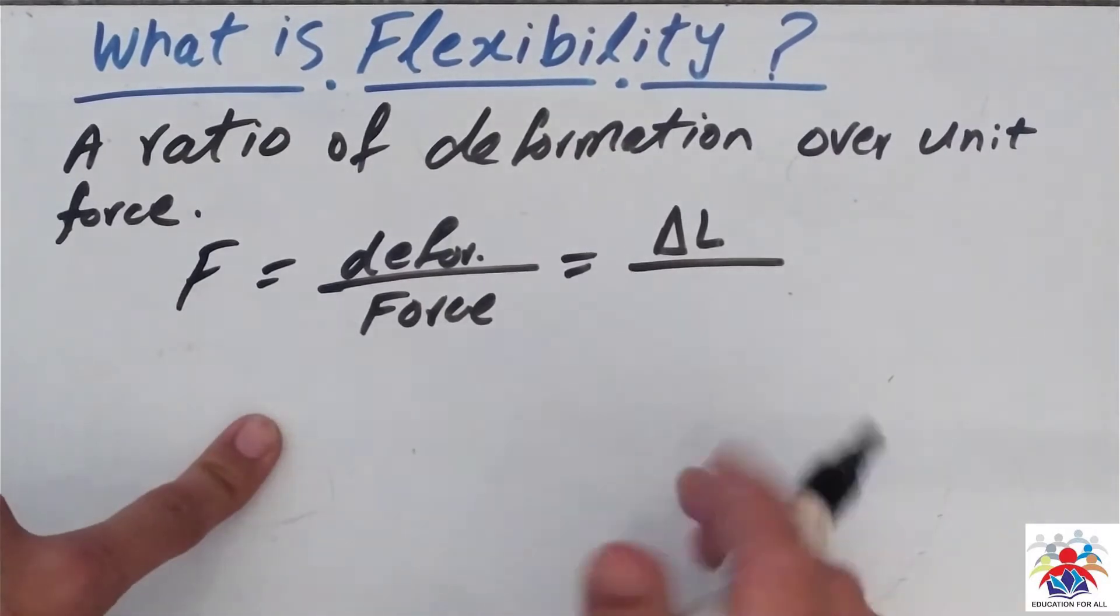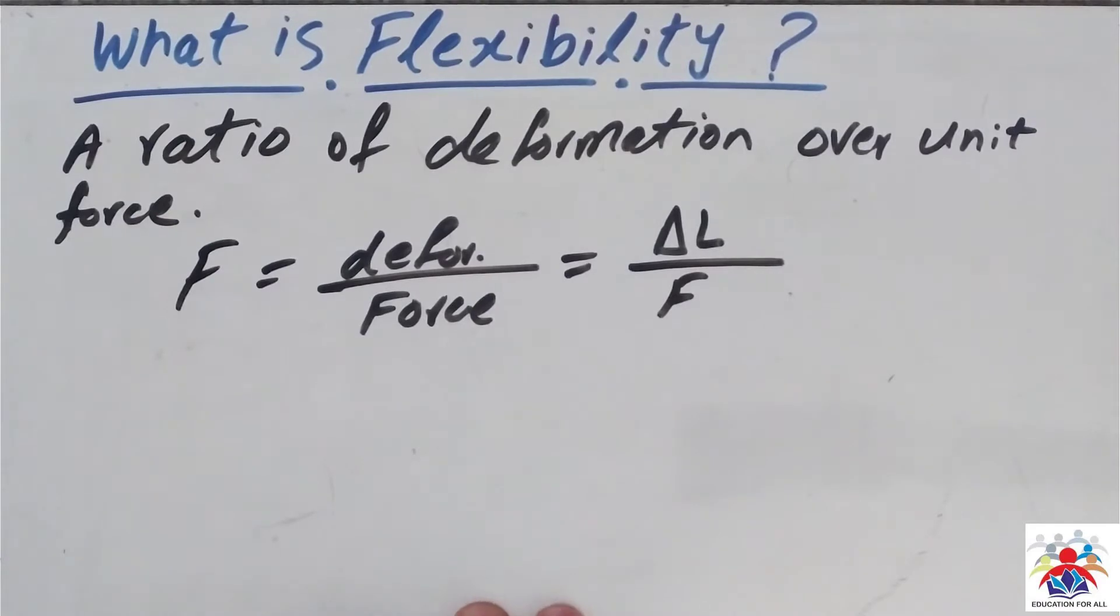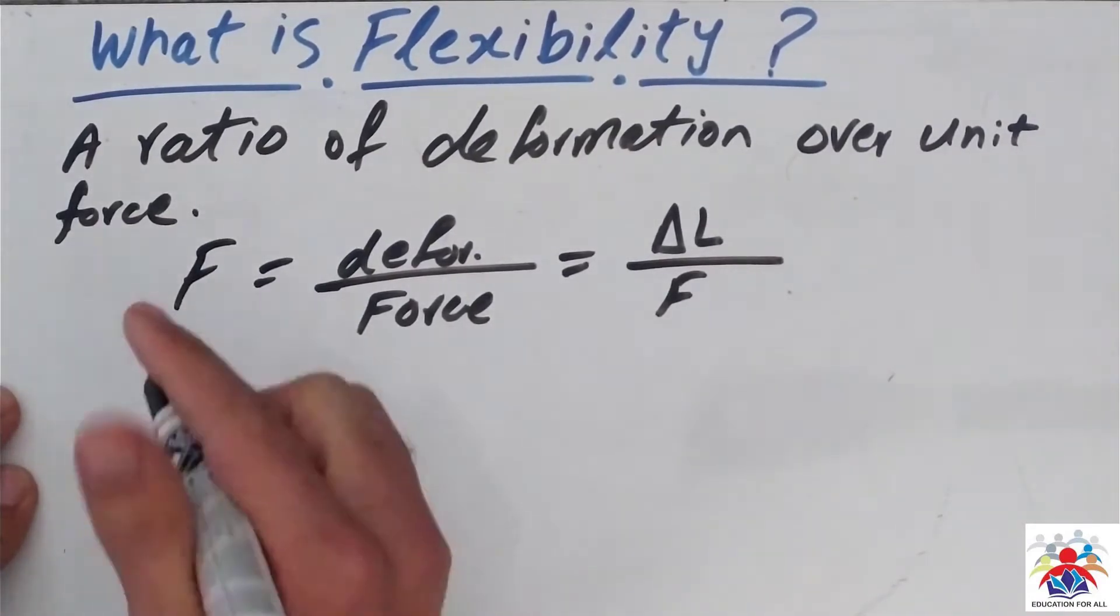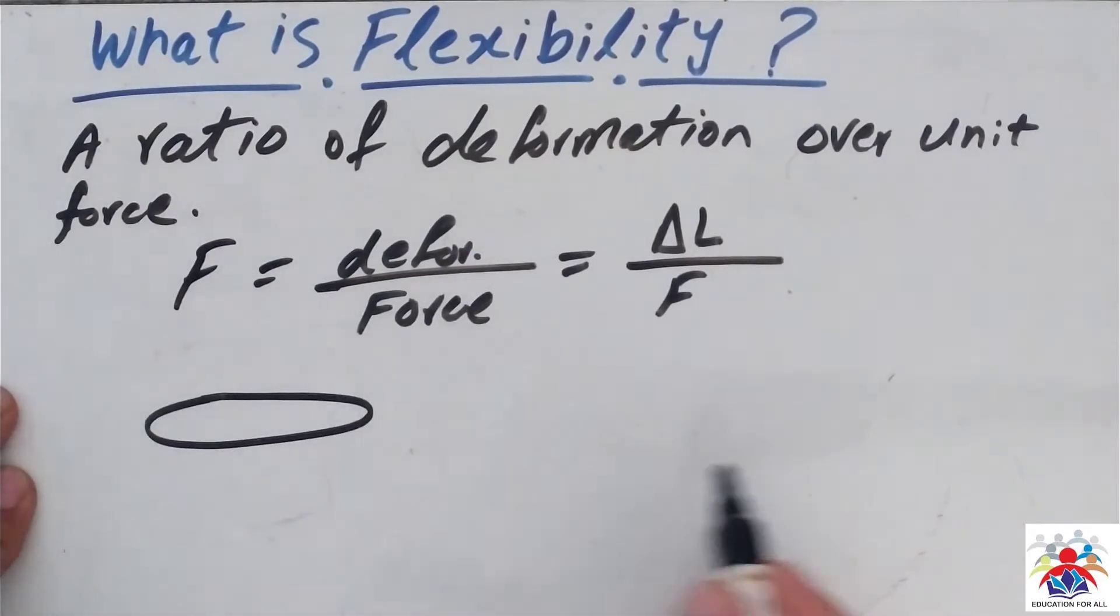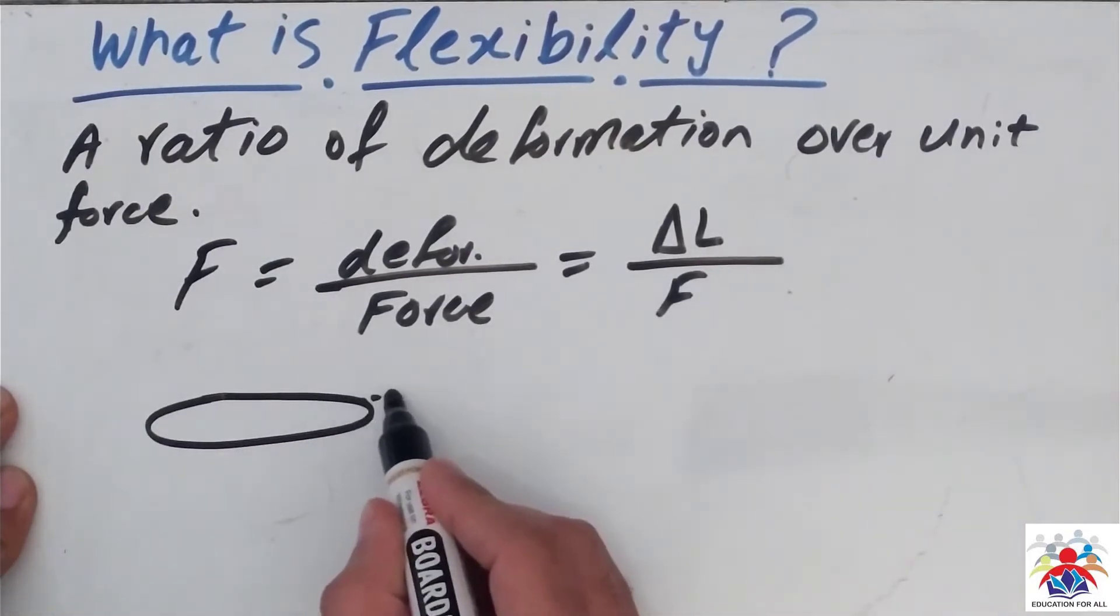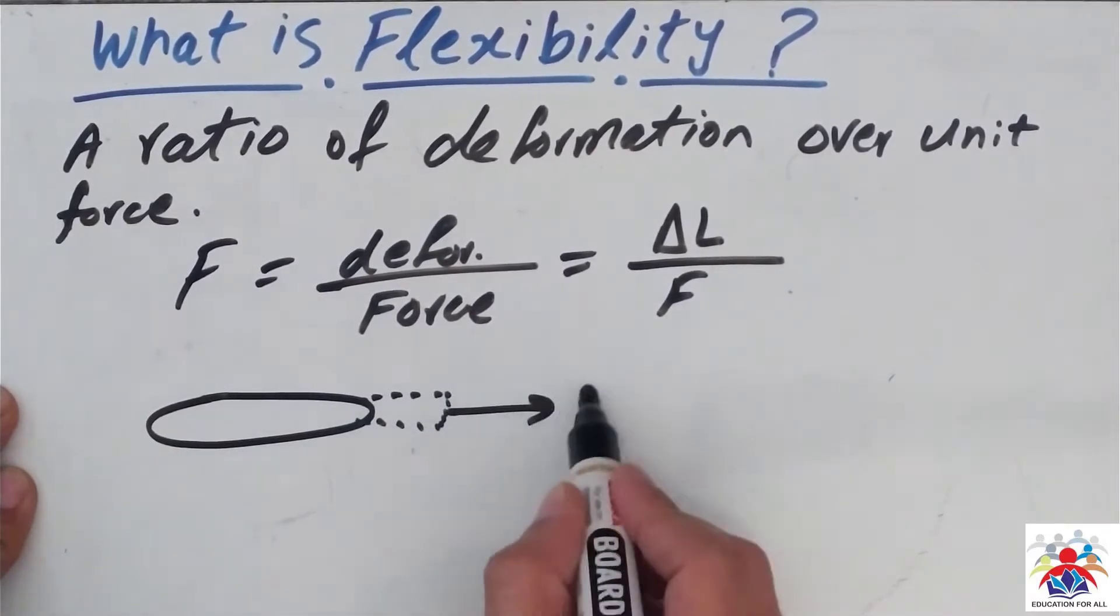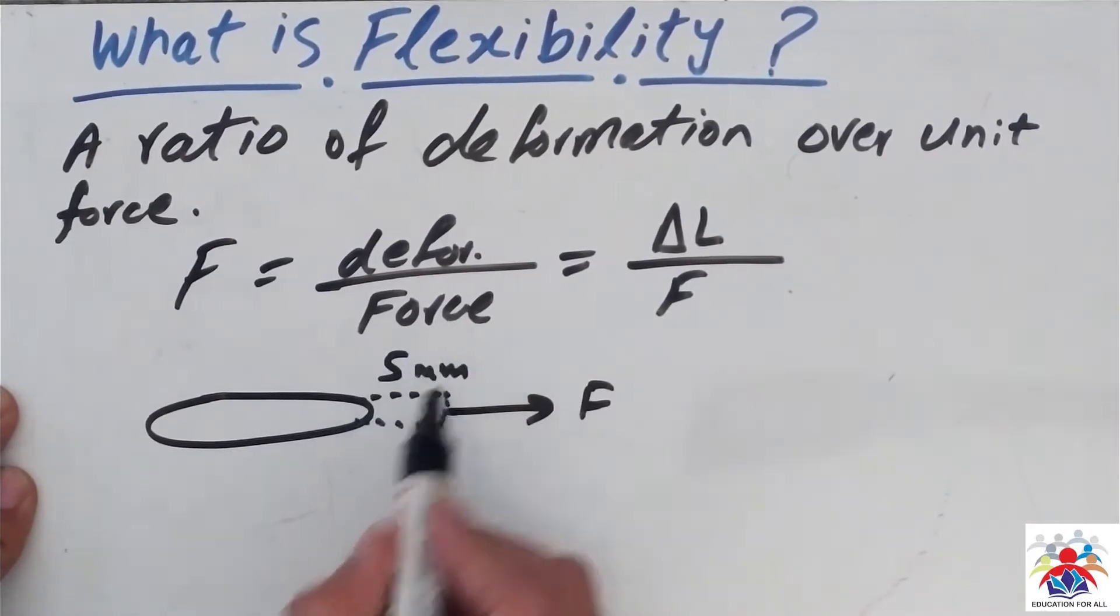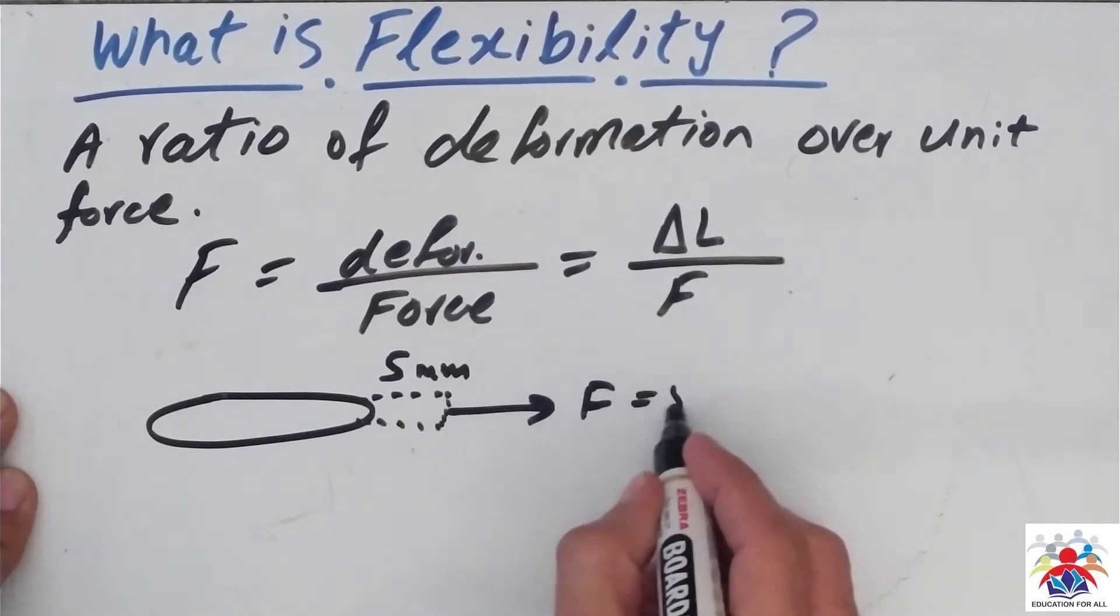So in order to give you more clarity about this flexibility, I am going to give you an example. For example, we have a steel rod. Then upon applying a force on it, it extended to five millimeters. The force could be 50 kilonewtons, or you can say just 50 Newtons.